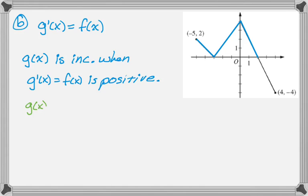And then if g of x is concave down, then g prime of x, which again is f of x, must be decreasing. So I'm going to highlight those regions. So there and there. That was from negative 5 to negative 3, and then from 0 to 2.